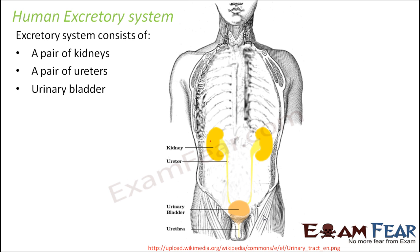Then there is one single urinary bladder, a big sac-like structure used for storage of urine. Both ureters connect to this urinary bladder. Finally, there is an opening called the urethra, which opens to the outside — urine is excreted out through this opening. These are the four important parts of the human excretory system.